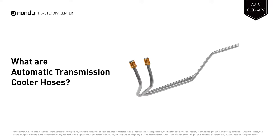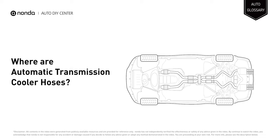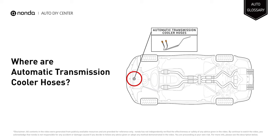Automatic transmission cooler hoses are flexible tubes that carry transmission fluid to and from a heat exchanger or oil cooler. An automatic transmission cooler is placed inside the radiator of your vehicle, and these hoses connect the transmission cooler to the vehicle's radiator.